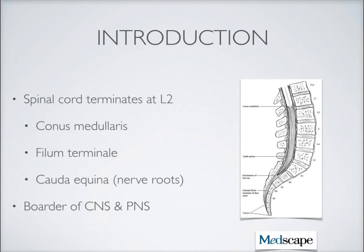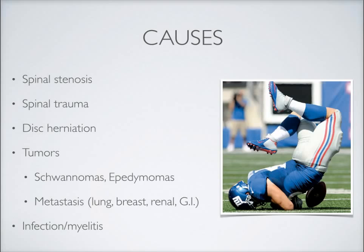To start with, the spinal cord is going to terminate or come to an end around the L1-L2 region of the vertebral bodies. That area where the spinal cord terminates is known as the conus medullaris, as it tapers off into what turns into a filum terminale and several nerve roots, which are collectively called the cauda equina, meaning horse's tail because of its appearance. This is really the interface of the central nervous system and the peripheral nervous system, and as such we can see some complex features with both syndromes.